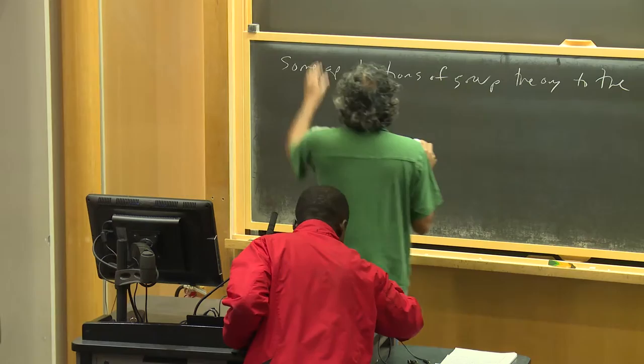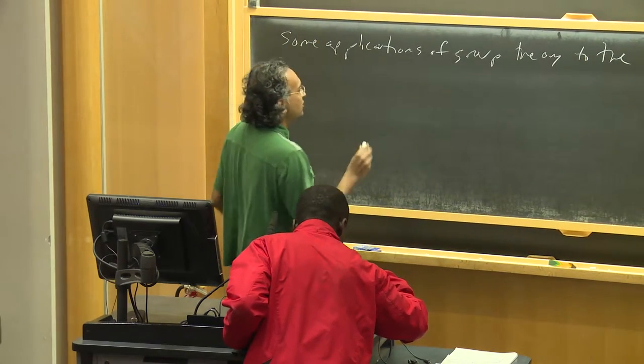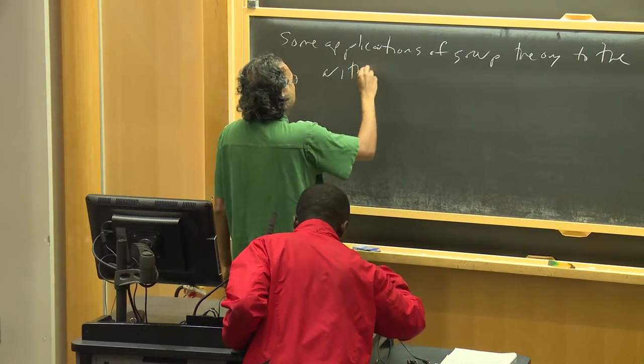So this talk, where both the pre-talk and the main talk are called 'Some Applications of Greek Theories in the Arithmetic of Abelian Varieties.'